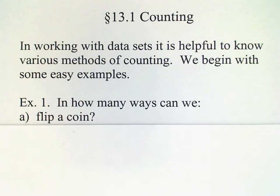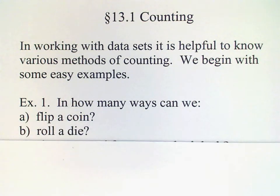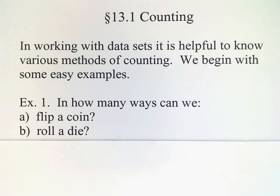For example, if we flip a coin, how many ways can we do that? Well, obviously two — it could be either heads or tails. A standard die used in gaming has six sides, and the sides are numbered with spots one through six, and so there are six different ways to roll that die.